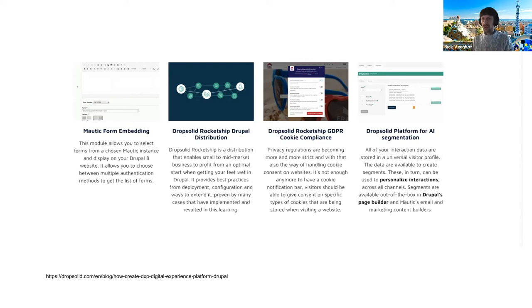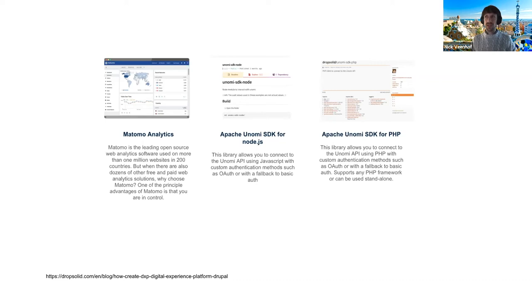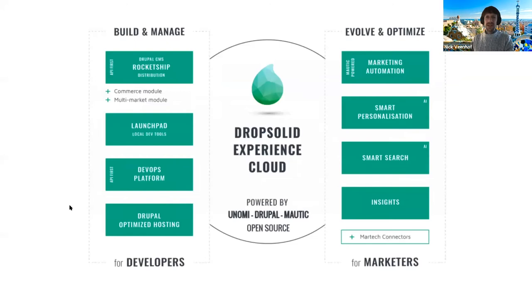Because we manage all data ourselves, all data is first-party. The cookies are not based on a third-party domain and won't be blocked in the future by Safari, Firefox, or Chrome. Using the Cookie Compliance or EU Cookie Compliance module, tracking can also be prevented from loading at the start, so you are fully GDPR compliant. We also showed AI segmentation, and you can add Matomo as a GDPR-friendly alternative to Google Analytics. There are also SDKs for Node.js and PHP.